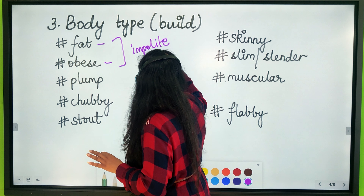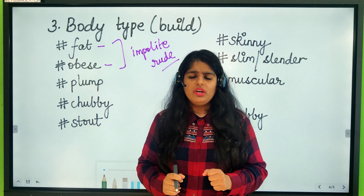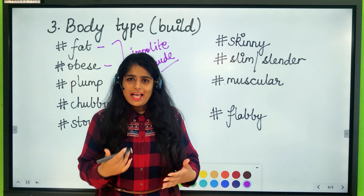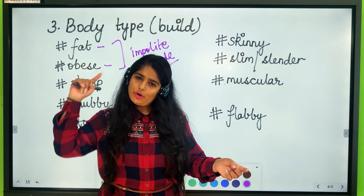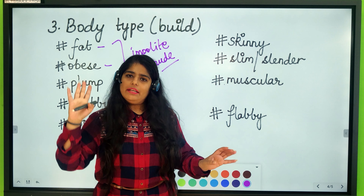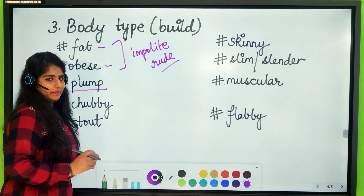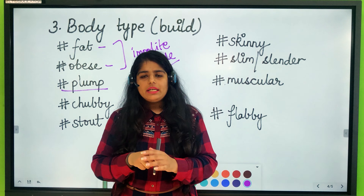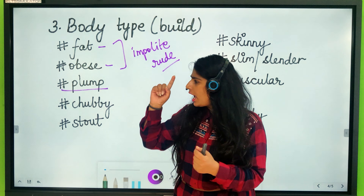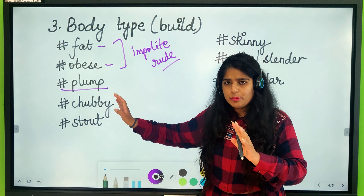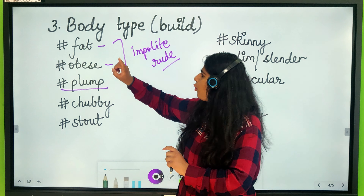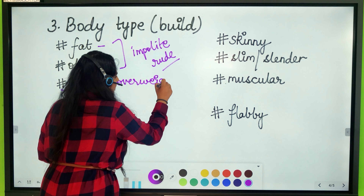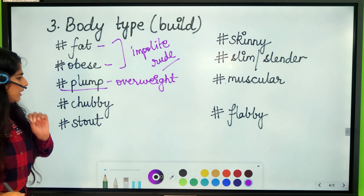'Fat' and 'obese' both mean overweight, but they are very impolite and rude. Instead, you can use the word 'plump,' which also means a bit overweight but doesn't sound harsh or impolite. This word is commonly used in British English — Britishers use 'plump' instead of 'fat' or 'obese.' It's a polite way of saying someone is overweight.